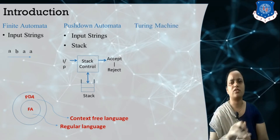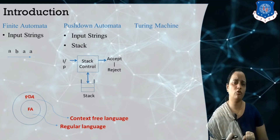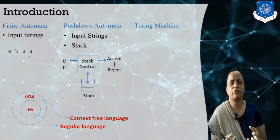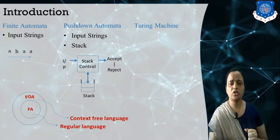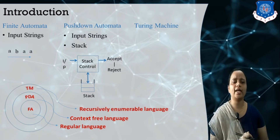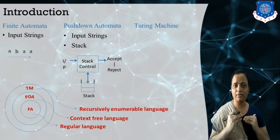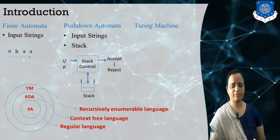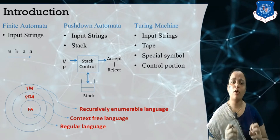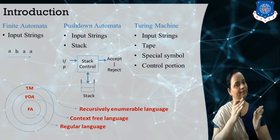Now, what is more powerful than these two machines — finite automata and PDA? The Turing machine. A Turing machine actually accepts the recursively enumerable languages, which are not accepted by the PDA and not accepted by regular languages. So here you can see that the Turing machine contains the input string — the tape.